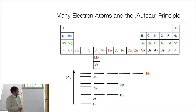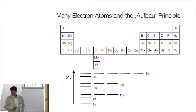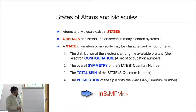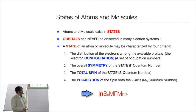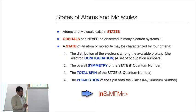When we start to fill in electrons, a number of complications arise. The guiding principle — one easy to forget — is that atoms and molecules exist in electronic states. Orbitals are great and help us organize our thinking, but at the end of the day it is states that matter. These orbitals you cannot observe, including the 3d orbitals in transition metals. As I said before, the states of an atom or molecule can be characterized by four criteria.